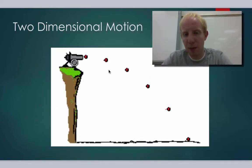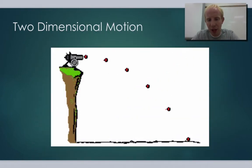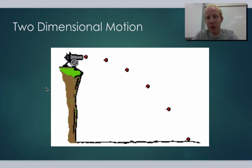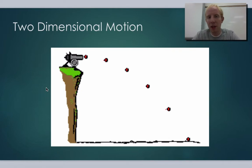One of the most common cases is with a projectile. For example, in this picture right here, we have a cannon shooting some object a distance away, and it's going to hit the ground. We want to be able to figure out how long it's going to be in the air and how far away it's going to hit.